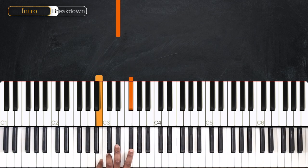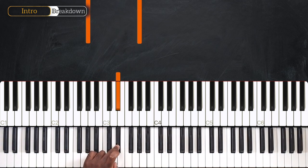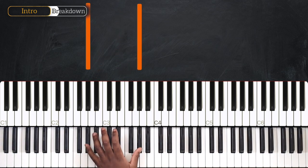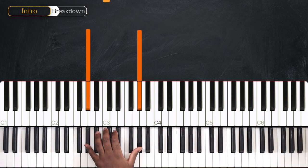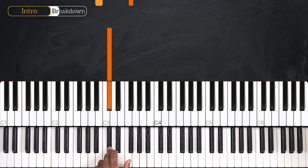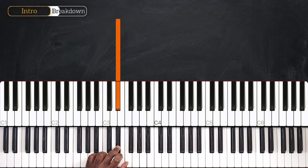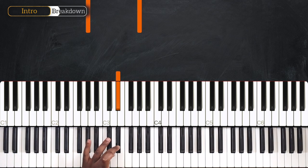And then directly after that, on the 4th beat, I'm playing Eb. The full count: 1, 2, 3, E and a 4, E and a 1, 2, 3, E and a 4. So that's the first part of the intro.